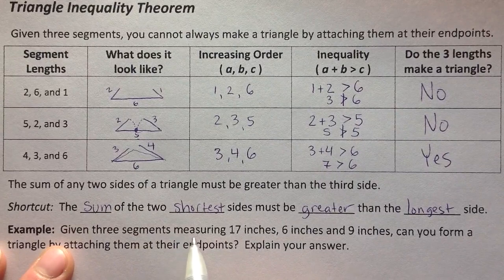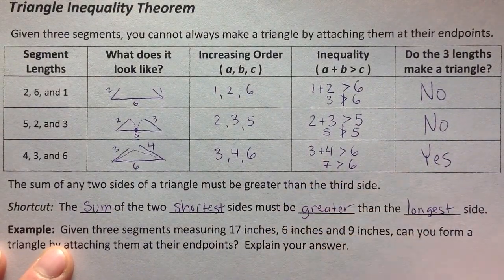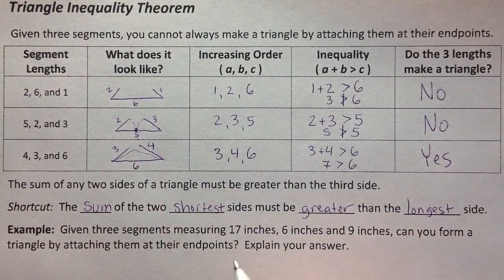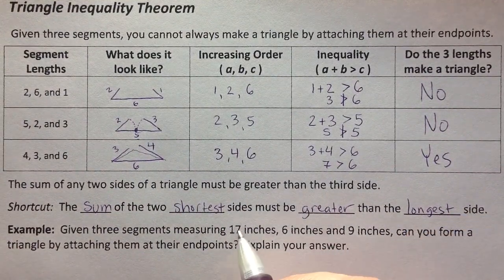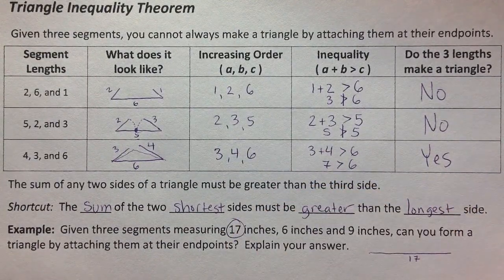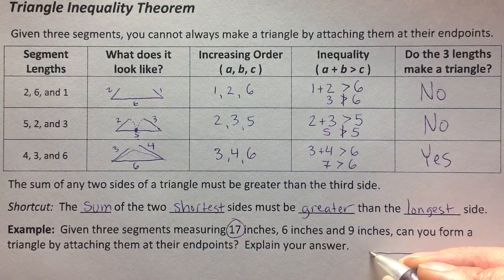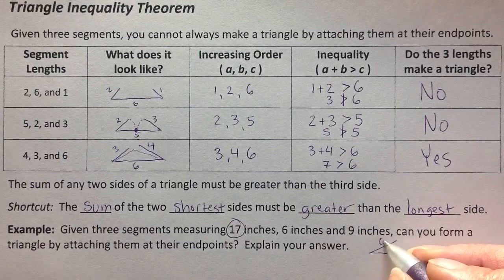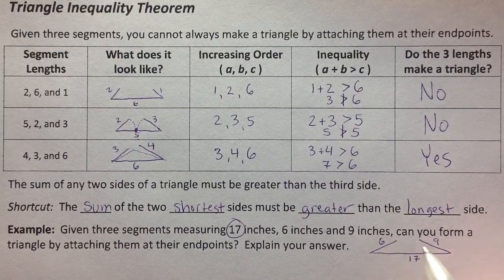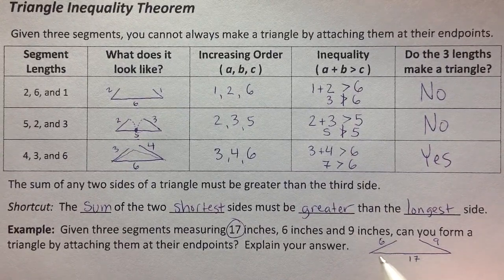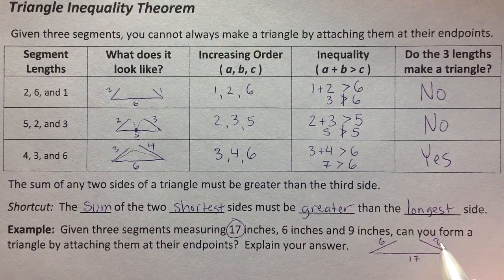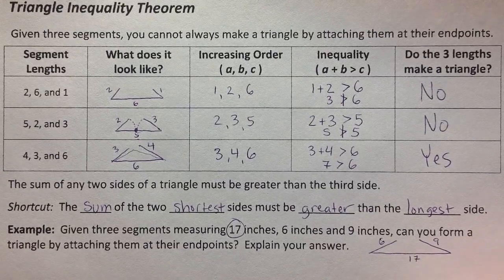So let's try an example. This is how it could be worded in a question. Given the three lengths measuring 17 inches, 6 inches and 9 inches, can you form a triangle by attaching them at their endpoints? So the first thing I need to do is make sure I know which one's the longest. I'm picturing that one as the one that's solid, not moving. I attach the two shorter ones, 6 and 9, and I'm asking myself, to make a triangle, these two have to reach, and actually more than reach, they're going to have to be more than this one.